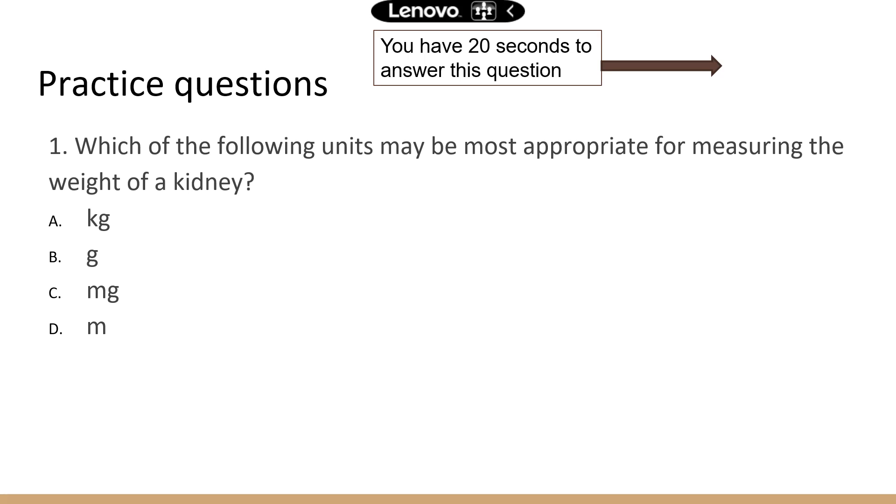Now, to answer this question, we can actually, we can eliminate D right away, because M is a meter, and that's a unit for length. It has nothing to do with the weight. So D is not going to be the correct answer.